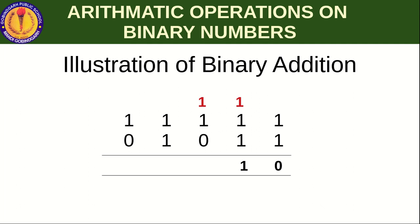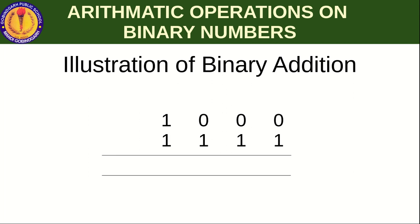So with three ones: first two ones give zero and carry one, then zero plus the third one gives one. Simply remember: if there are two ones, the answer is 0 and carry 1. If there are three ones, the answer is 1 and carry 1. Now another example: 0+1=1, 0+1=1, 0+1=1, and 1+1=0 with carry 1.